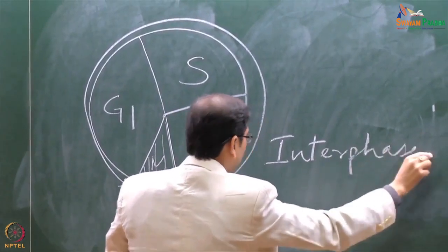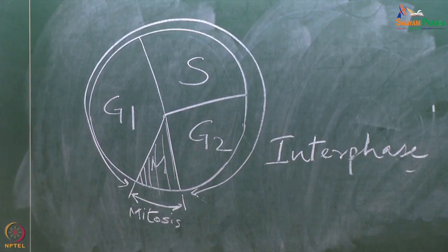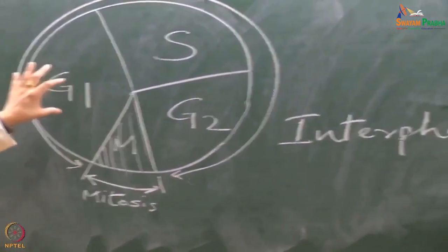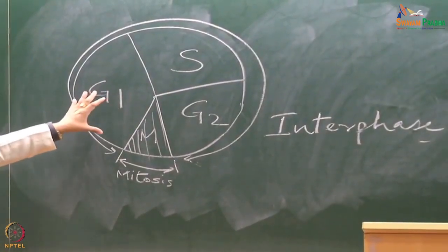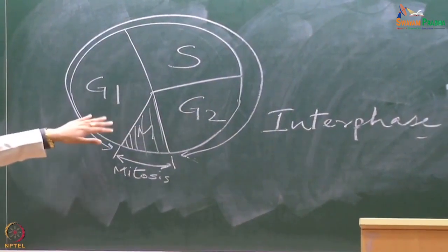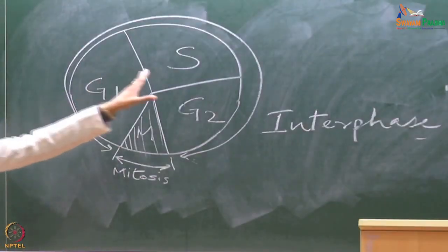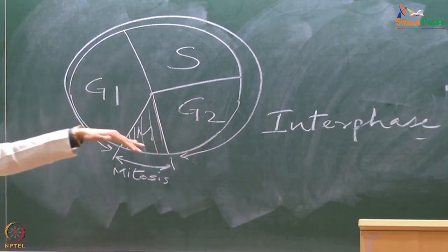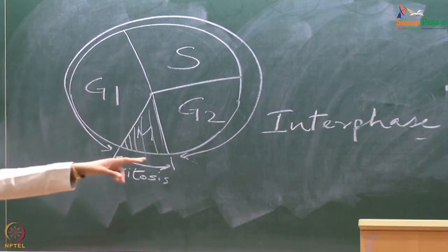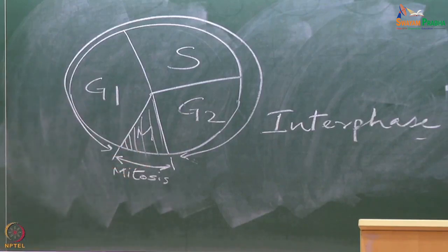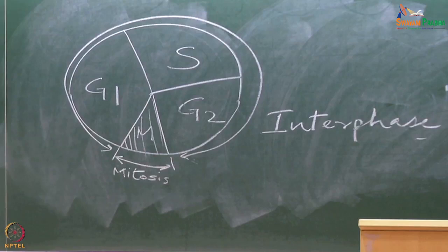The G phase names are a little misnamed — these are not gaps. They are actually quite crucial for the cell to prepare. G1 phase ensures that nucleic acid and chromatin content is sufficient and the cell is ready for DNA replication in S phase. G2 phase then ensures that DNA replication has occurred properly and the cell is ready for the mitotic phase.